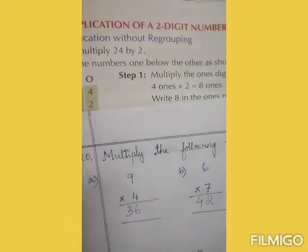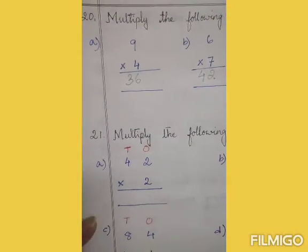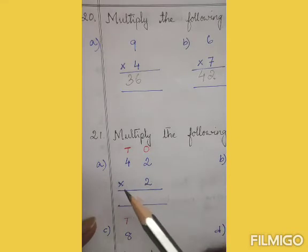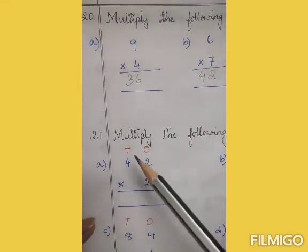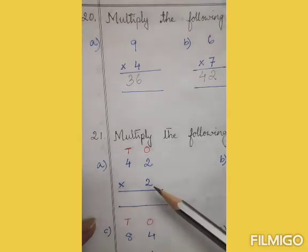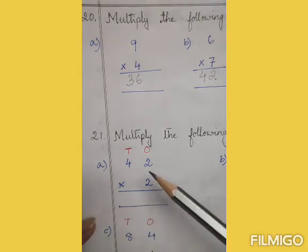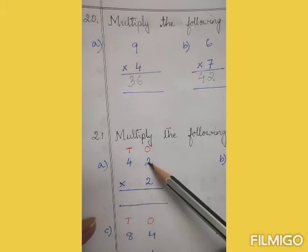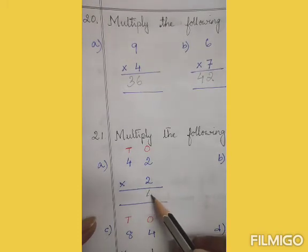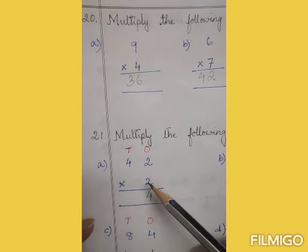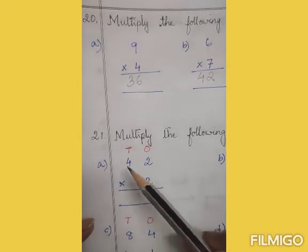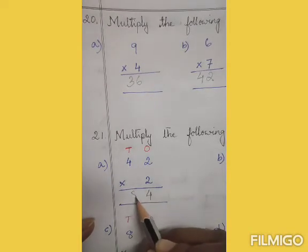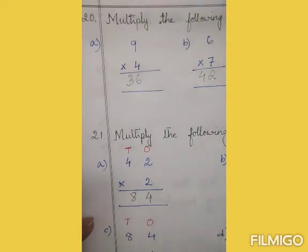Question number A: the digits are placed in the ones column and the tens column. We will multiply the digits first in the ones column, then in the tens column. So 2 into 2 is 4. Next, 2 into 4 — 2 fours are 8. And the answer is 84, which means 42 into 2 is equal to 84.